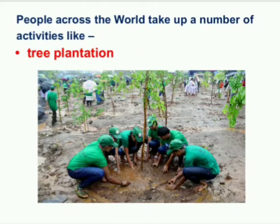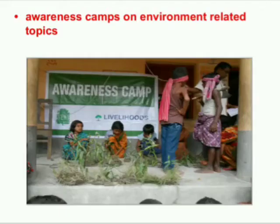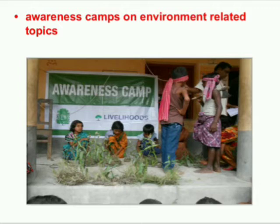People across the world take up a number of activities, like tree plantation — one particular day is fixed by a group of people who plant saplings in large numbers in a particular area and then regularly take care of those plants till they grow into trees. From this picture, you can make out that a camp by young school children is held, where some children are explaining through a play and spreading awareness about environment.